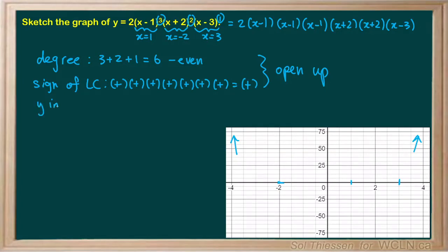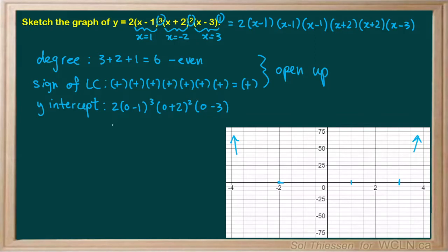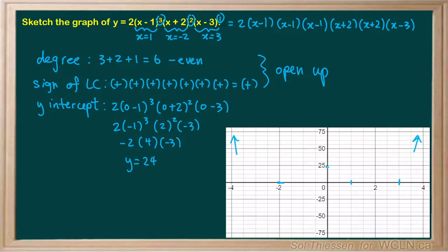Lastly, we need to determine the y-intercept. I recommend setting all the x's to 0. We'll have 2 times 0 minus 1 cubed times 0 plus 2 squared times 0 minus 3. This gives us 2 times negative 1 cubed times 2 squared times negative 3. So 2 times negative 1 cubed is negative 2, and 2 squared is 4, with the negative 3 remaining. Negative 2 times 4 times negative 3: 4 times negative 3 gives negative 12, times negative 2 gives positive 24. So our y-intercept will be at y equals positive 24.